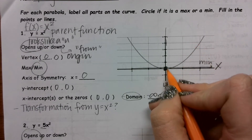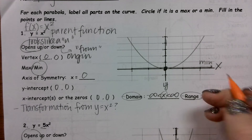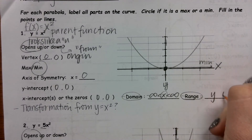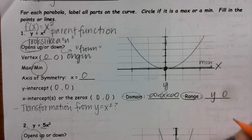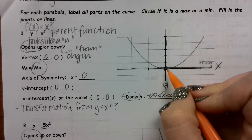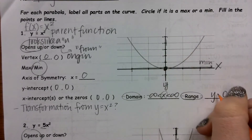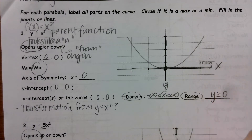Looking at the vertex right here, the vertex is zero — the y value is zero. Because this parabola opens up, all of my range values are going to be greater than or equal to zero.